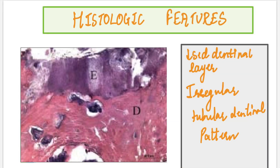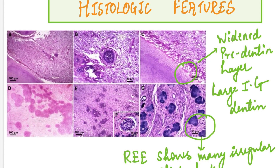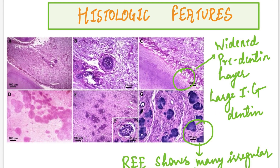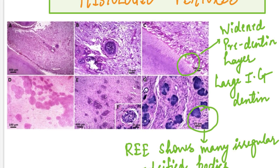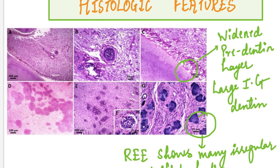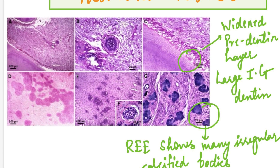Moving on to the histological features: the most striking feature is a marked reduction in the amount of dentine being formed. There is also an irregular tubular pattern in the dentine — the dentinal tubules are not arranged in the normal morphological pattern but rather in an irregular pattern. In this picture we can also see widening of the pre-dentinal layer and a greater number of irregular dentine depositions, along with many irregularly calcified bodies evident in the slide.